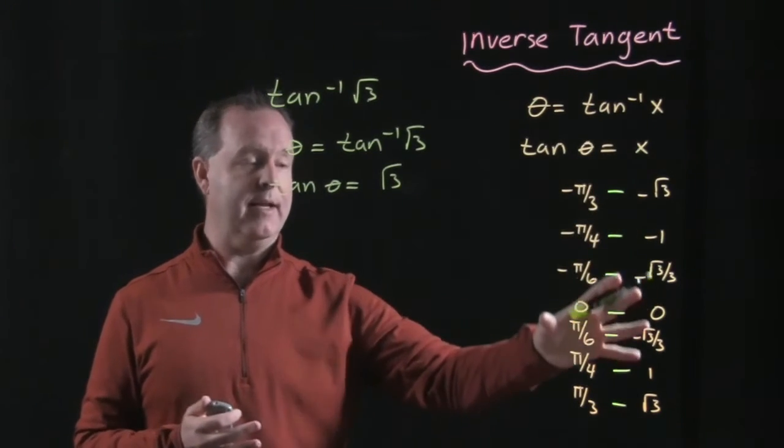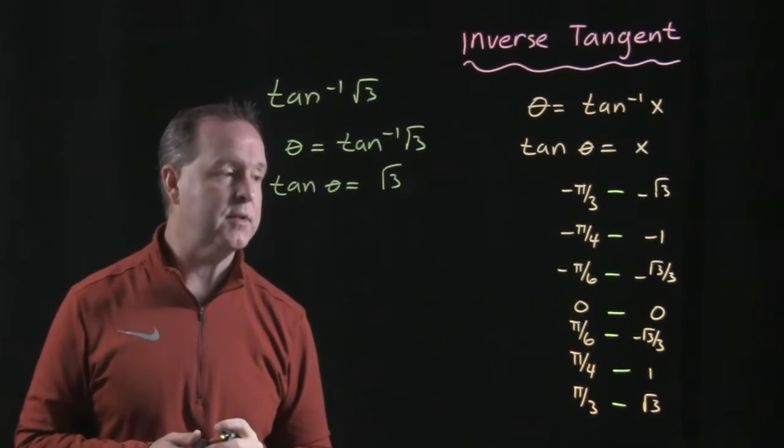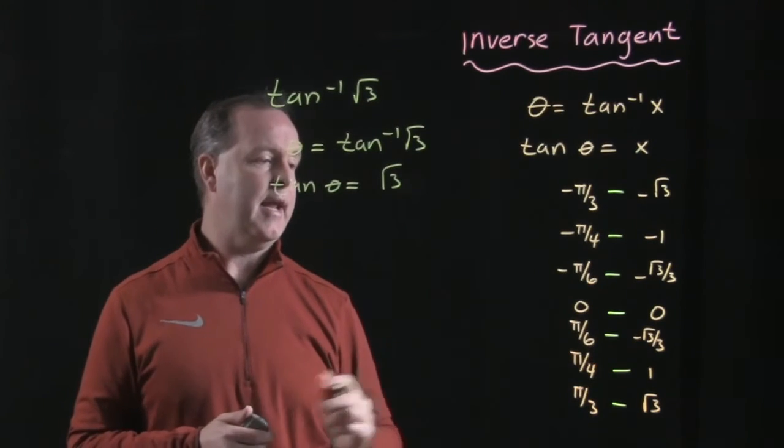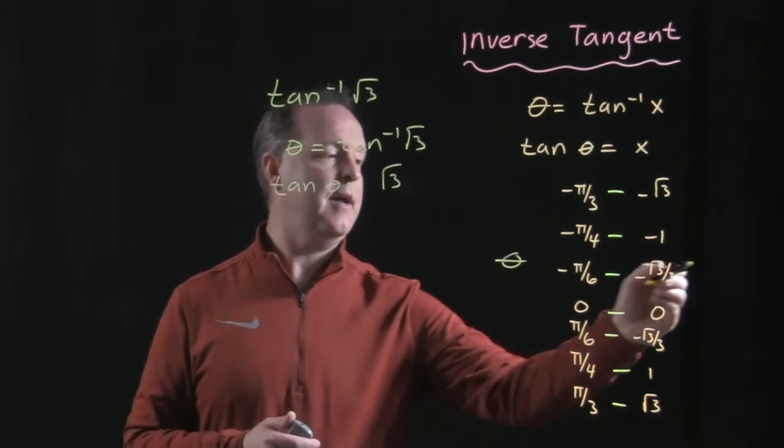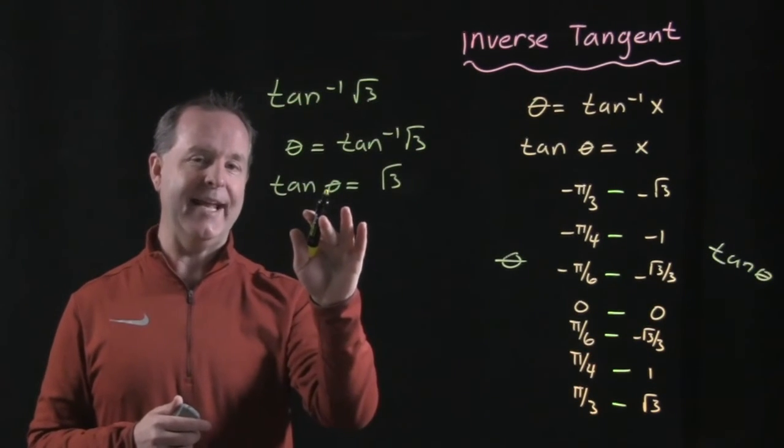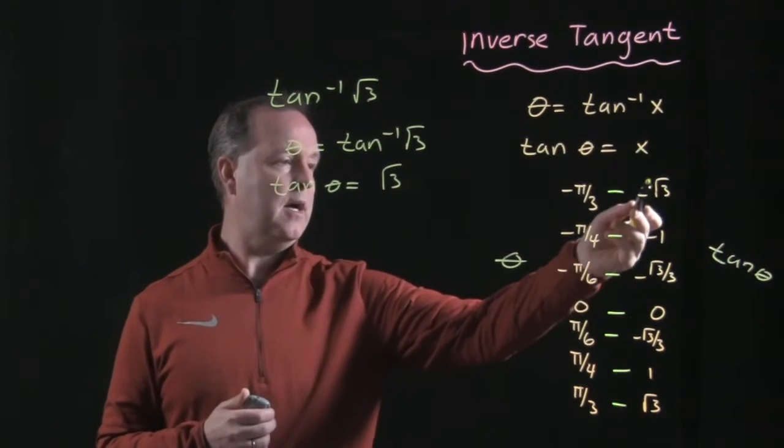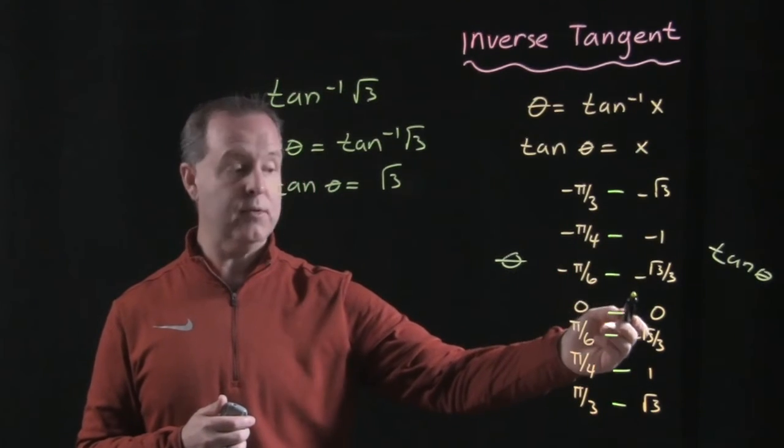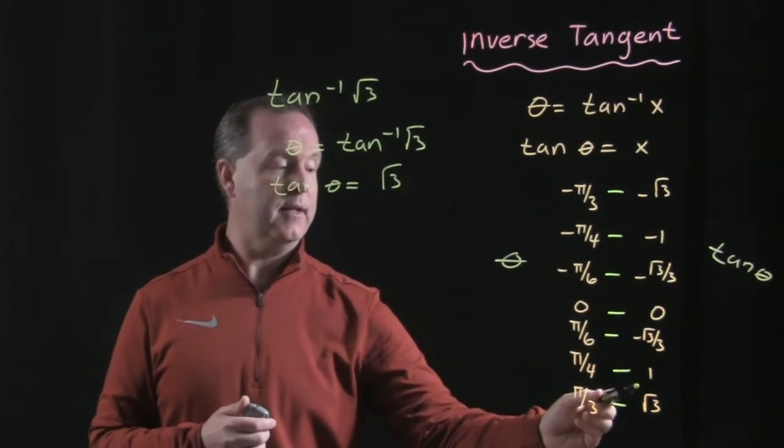The third step then is look at my values or the values that we're familiar with. And so I have my θs here, I have my tangent of θs there. I know I'm looking for a tangent of θ that's √3. I'll scroll through all my values where I find √3. It's right there.